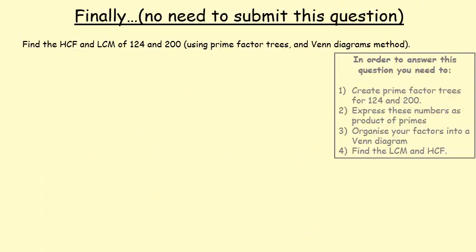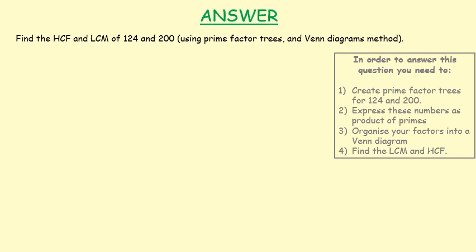You don't need to submit this question — this is just trying to bring together everything that we've been working on the last couple of lessons. So the challenge question is to find the highest common factor and lowest common multiple of 124 and 200. First of all, break those two numbers down into factor trees and write them as a product of primes, just like you did for your exit question. Then you're going to organise your factors into a Venn diagram, and then find the lowest common multiple and highest common factor. And that is basically everything you need to know in terms of finding highest common factor and lowest common multiple.